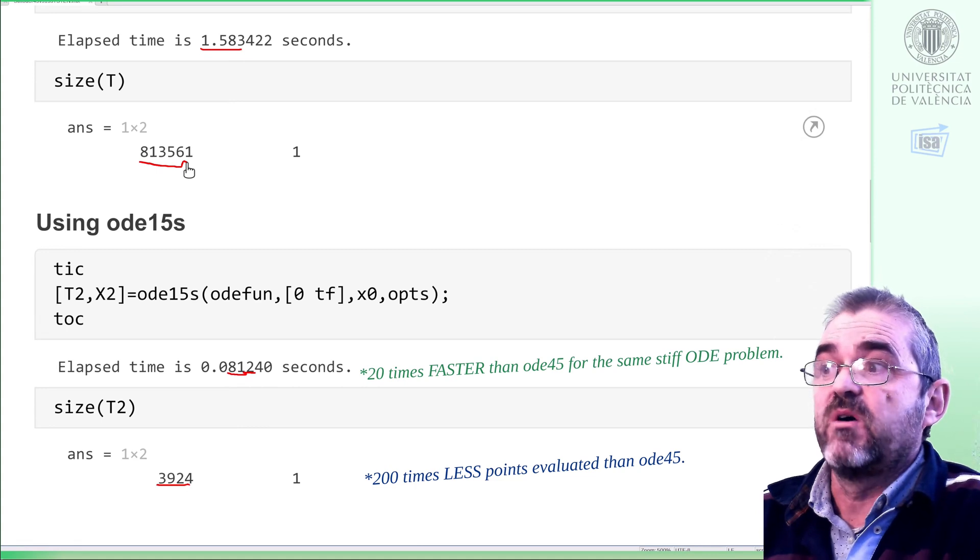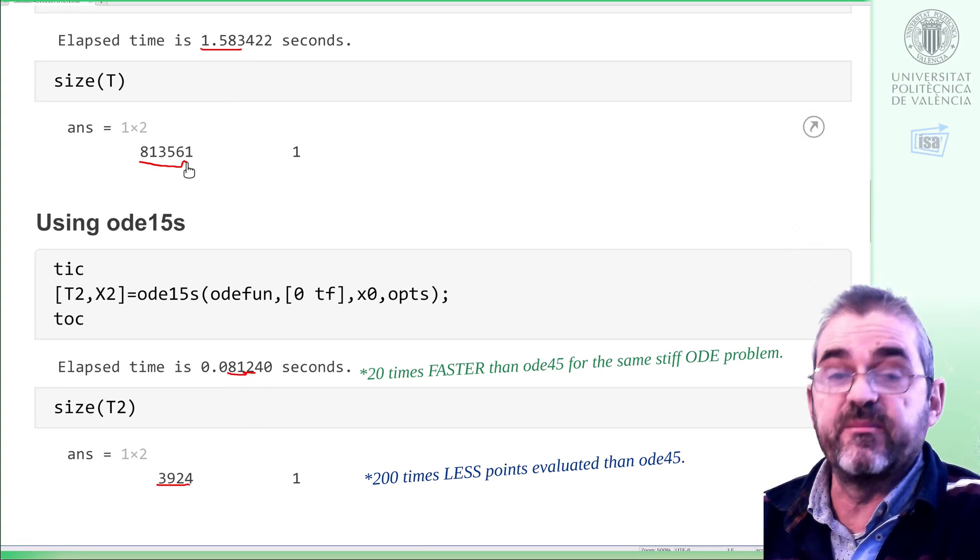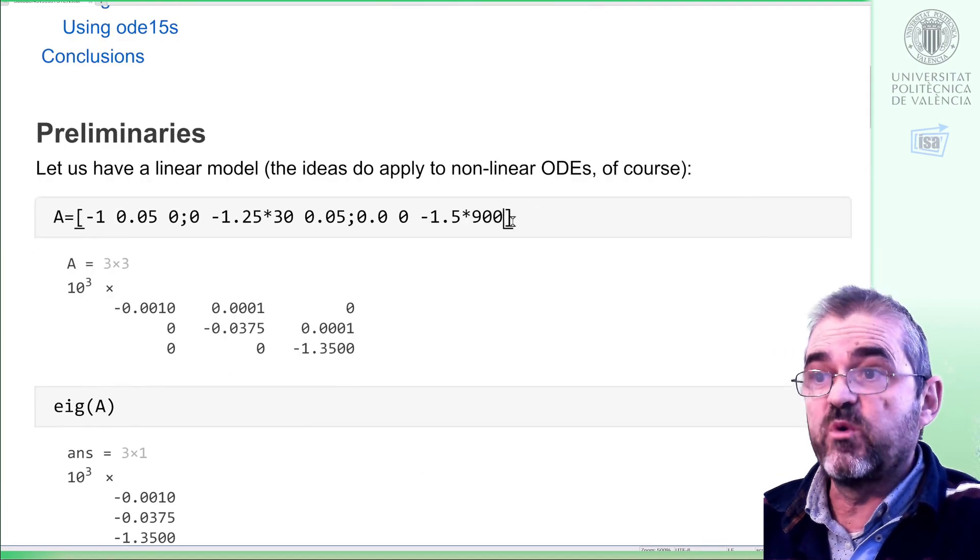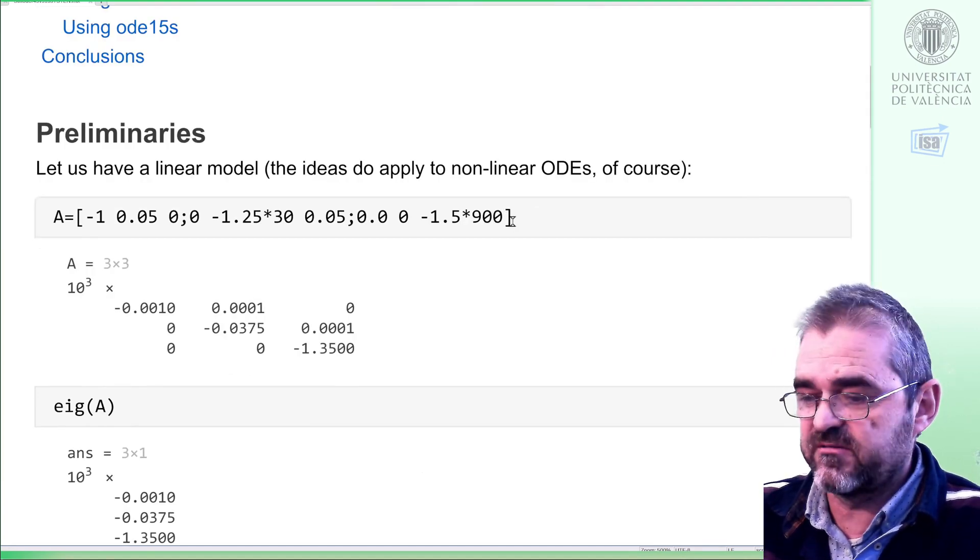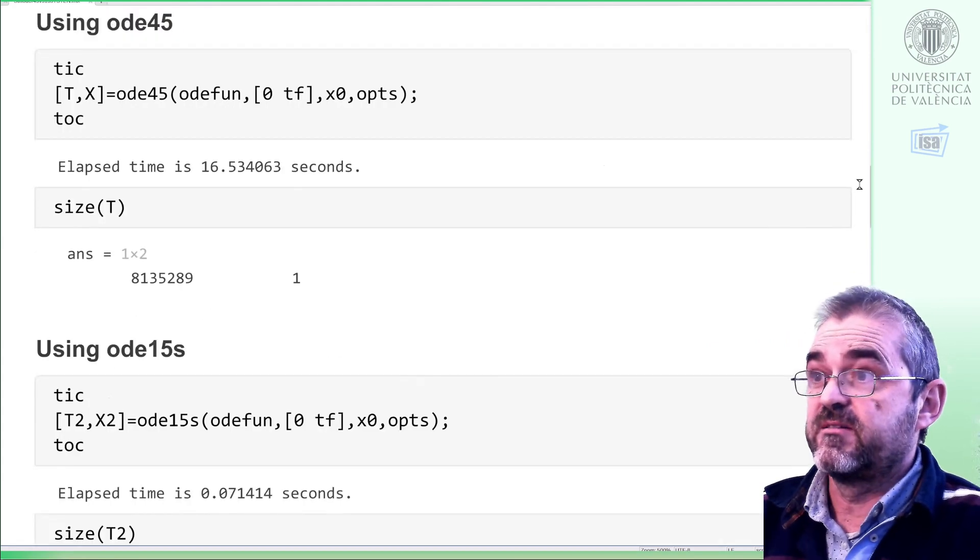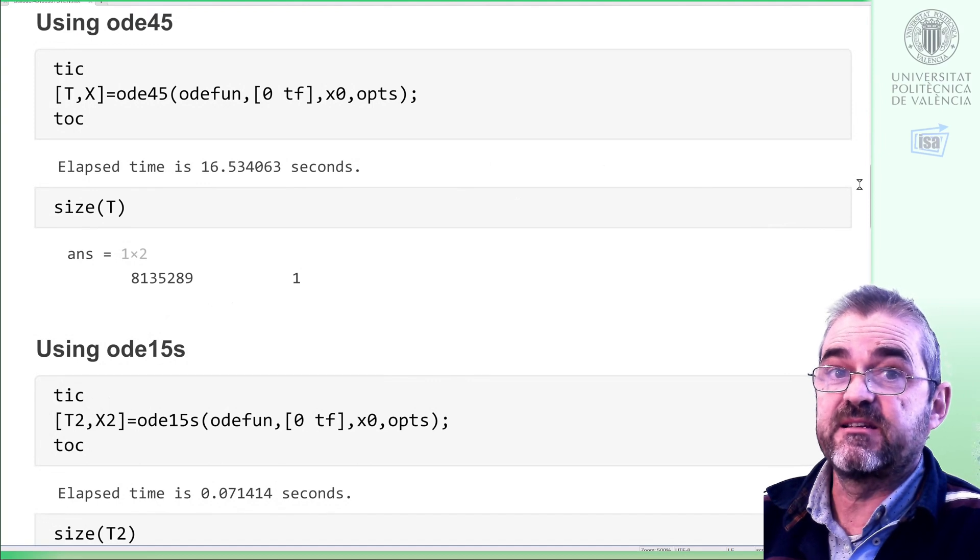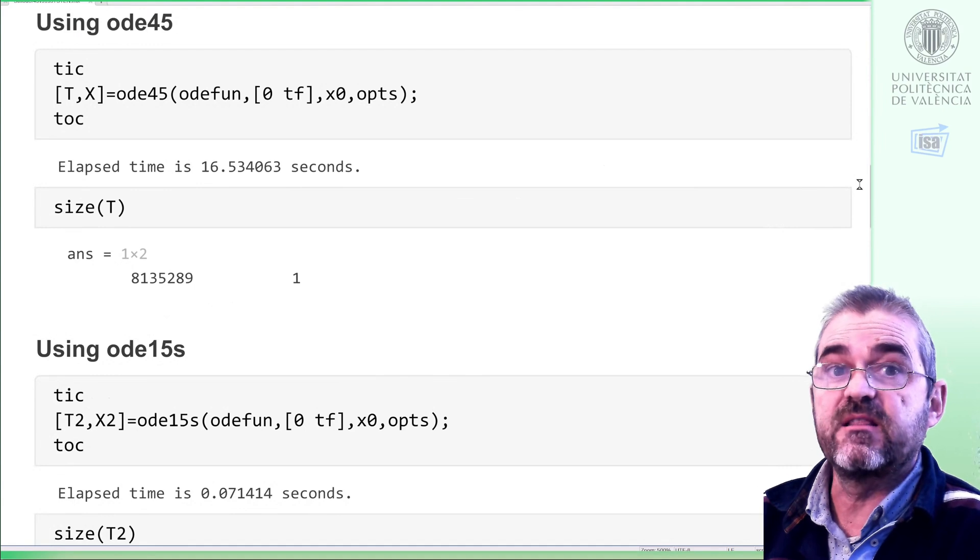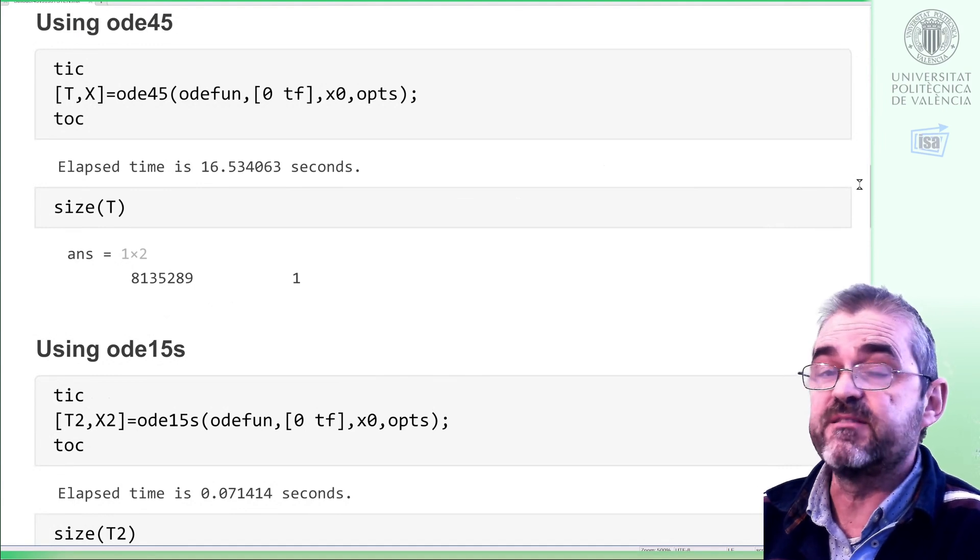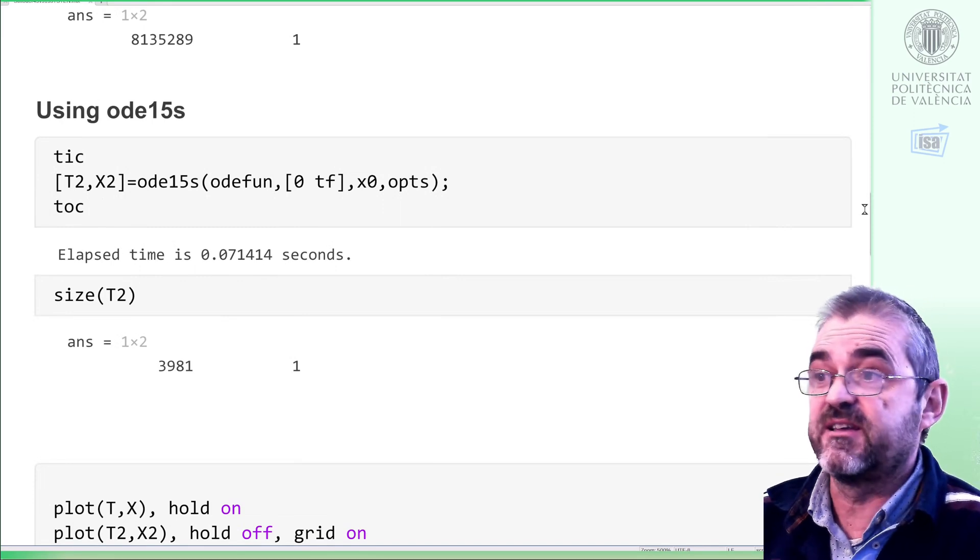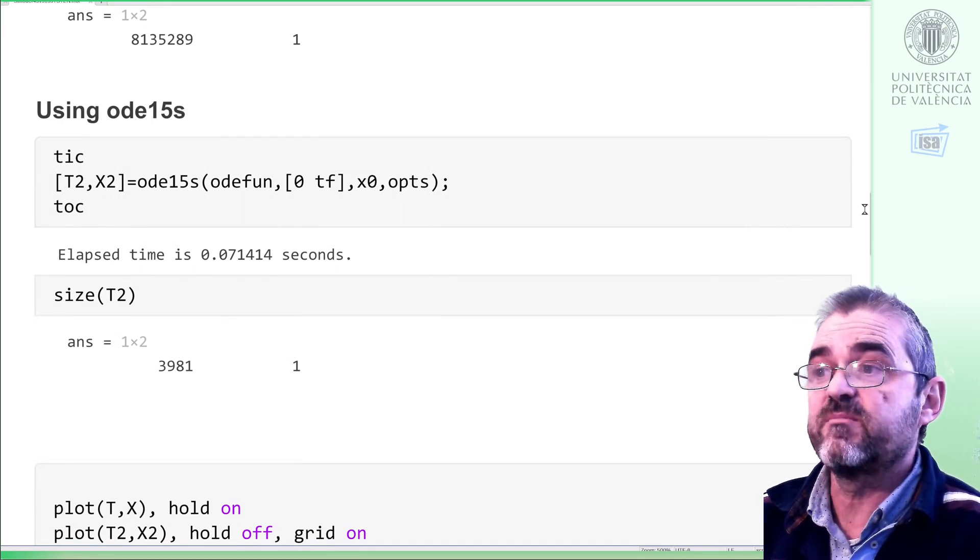So in this problem, ODE15S would be the recommended solver. And in fact, if the time constants were even more different, so I put here 9000 faster than in the first problem, and I execute, then ODE45 takes now 10 times longer, 16 seconds, and 10 times more points, 8 million points. But ODE15S takes even less, 71 milliseconds now, and again 4000 points.